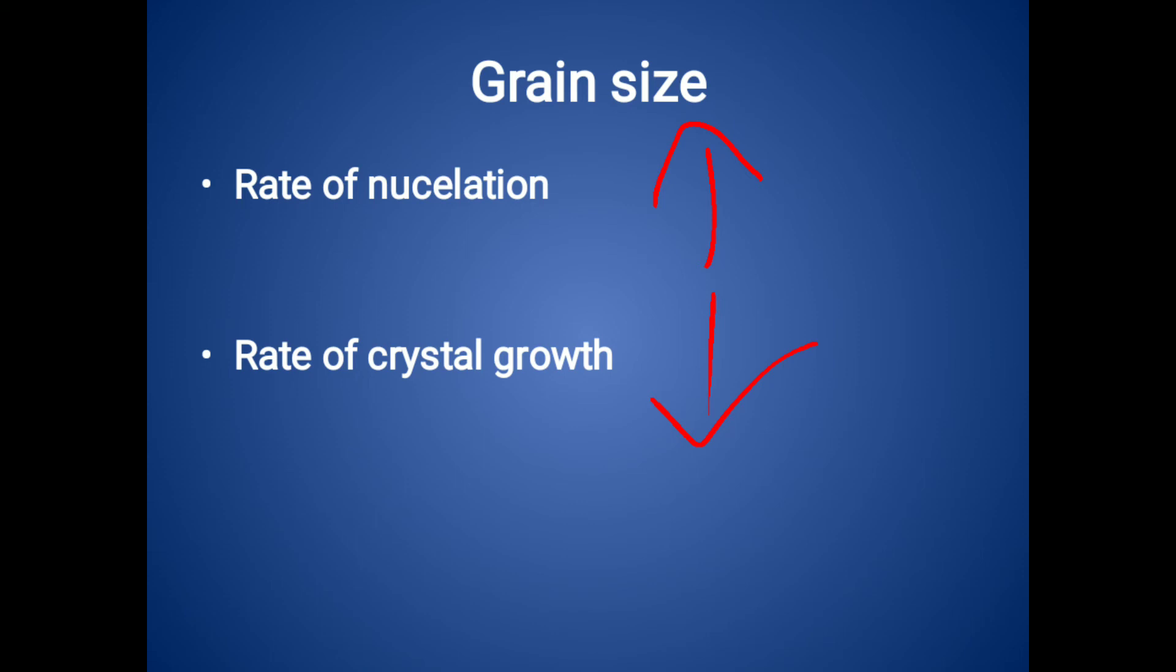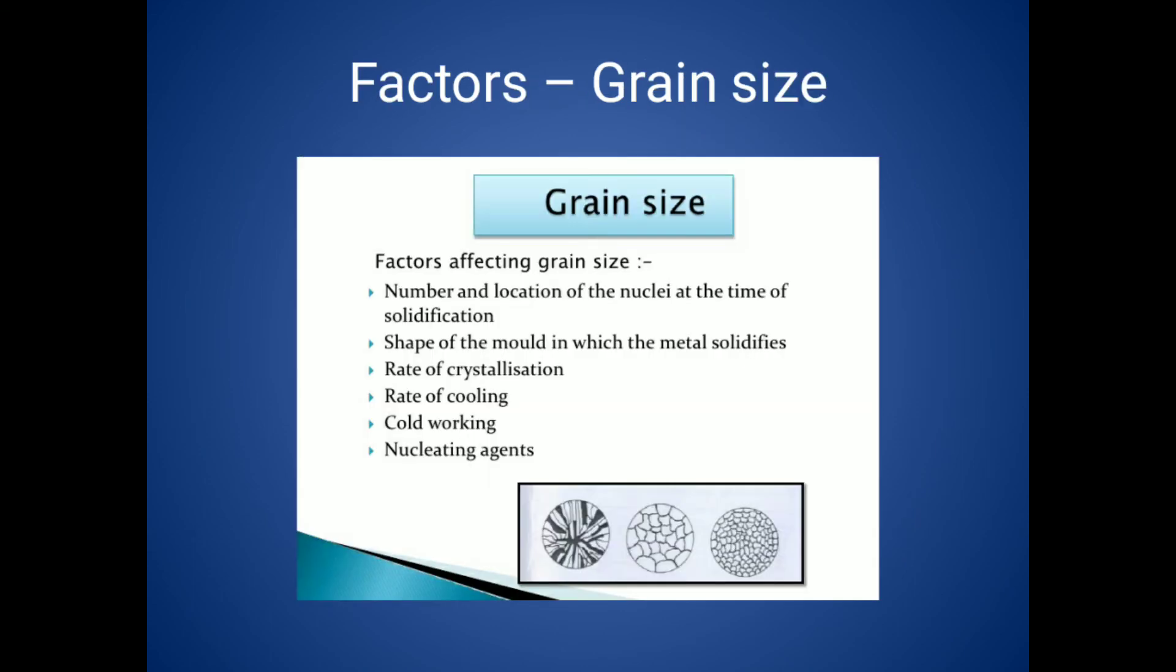If I want to increase the grain size, I will decrease the rate of nucleation and increase the rate of crystal growth. Increasing crystal growth means they are increasing their size in x-direction, y-direction, and z-direction. By doing this process we get the coarse grains - coarse grains is nothing but large grains. The strength will be weak but it exhibits good fatigue and creep properties.